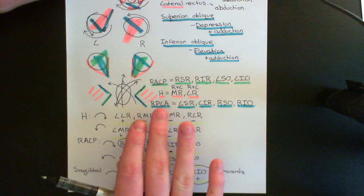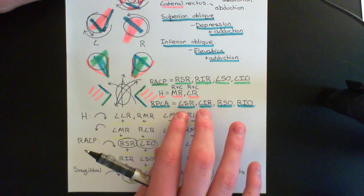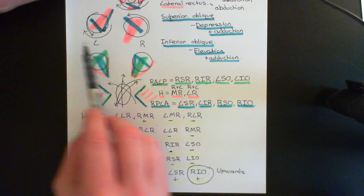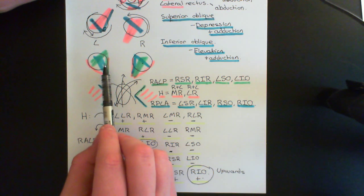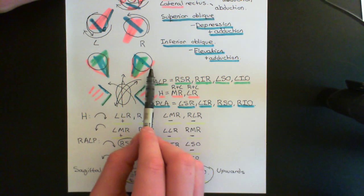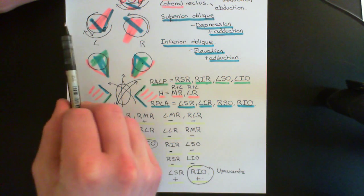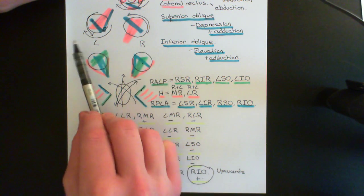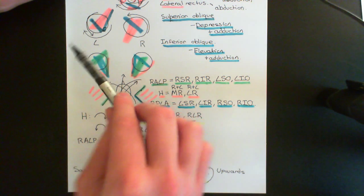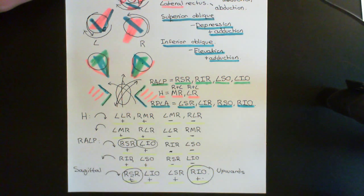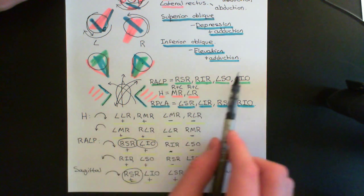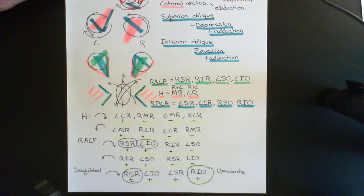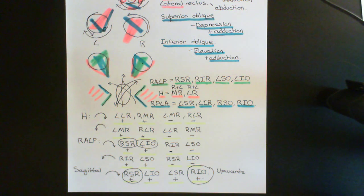When we look at the four muscles in each plane, two move the eye one way in that plane. For example, in the horizontal plane, the medial rectus on the left and the lateral rectus on the right move the eyes rightward. The other two — the left lateral rectus and the right medial rectus — move the eyes in the opposite direction. This holds true for all planes.